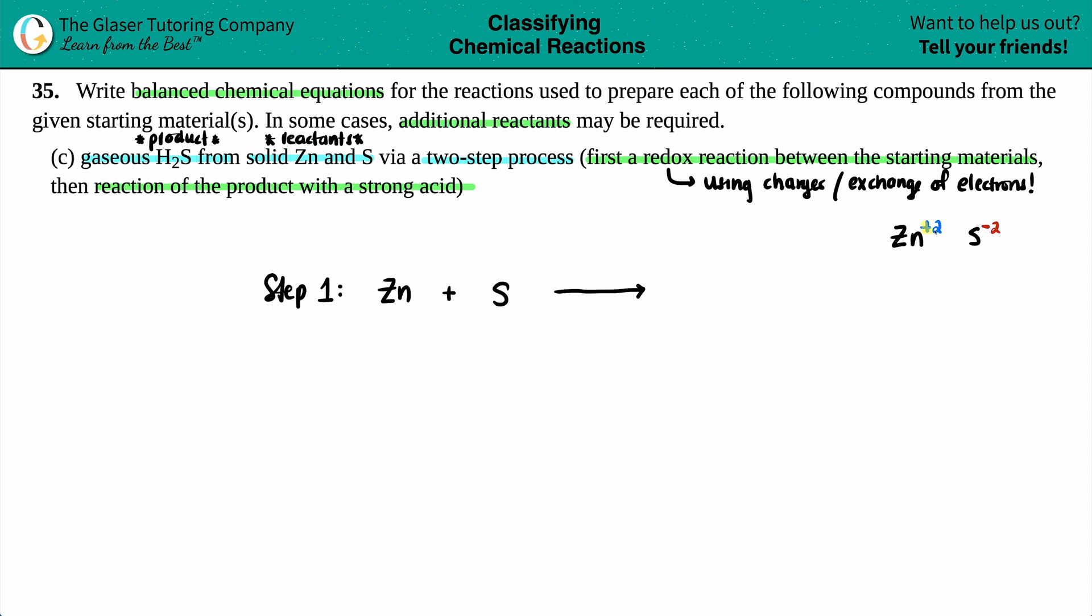Sulfur is in group 16 or 6A on the periodic table, just below oxygen. So it follows that trend. And sulfur is a negative two. Since we have the charges, we can crisscross these charges to get how many of each we need for our compound. The Zn crisscrosses down, telling me that I need two sulfurs. This negative two crisscrosses down, telling me that I need two zincs. When you have multiple numbers that are common, you want to simplify. So with ionic compounds, we need to simplify. Two and two, I could divide each of these by two to get one of each.